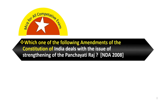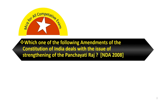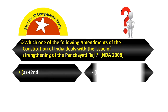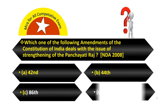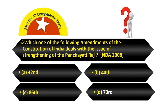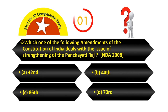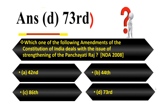Which one of the following amendments of the Constitution of India deals with the issue of strengthening of the Panchayati Raj? Option A, 42nd. Option B, 44th. Option C, 86th. Option D, 73rd. Your answer is 73rd.